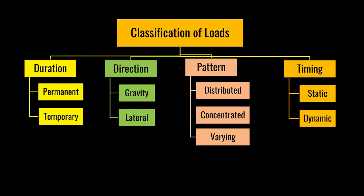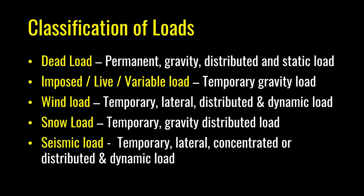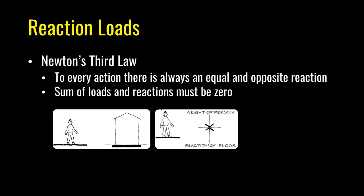Accidental loads include explosion, impact, fire exposure, and malicious attack. These are the most difficult to predict and a detailed risk assessment should be carried out to mitigate them. Natural, useful, and accidental loads are further classified by four attributes: duration (permanent or temporary), direction (gravity or lateral), pattern (distributed, concentrated, or varying), and timing (static or dynamic). For example, dead load is permanent, gravity, distributed, and static; wind load is temporary, lateral, distributed, and dynamic.